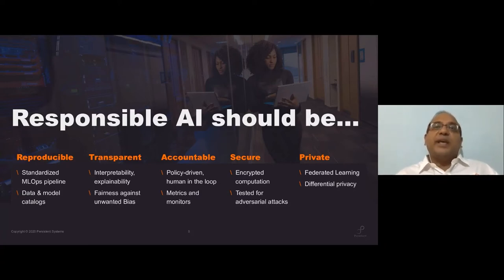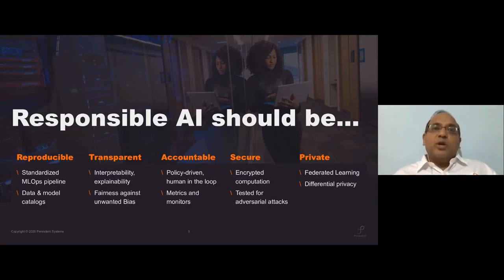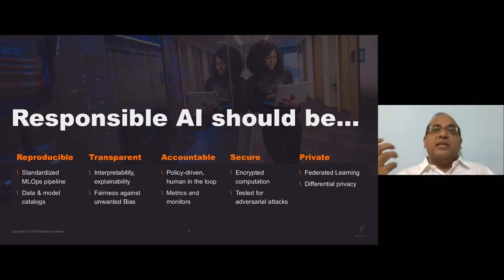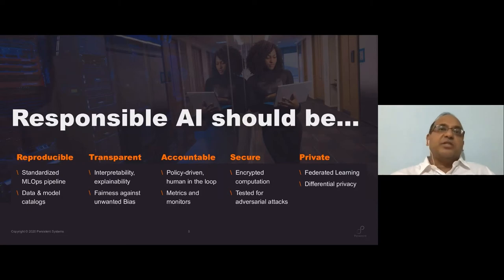The last two aspects are around security and privacy. Security is about confidentiality and integrity of your data. When systems process data, you want them in a secure environment — encryption at rest, HTTPS over the pipeline. But during ML model training, sensitive data is in plain text. That's where encrypted computation comes in — technologies like homomorphic encryption, where data remains encrypted during ML training, and trusted execution environments, which are hardware-isolated spaces protected by cryptography so processing isn't visible to your cloud provider.